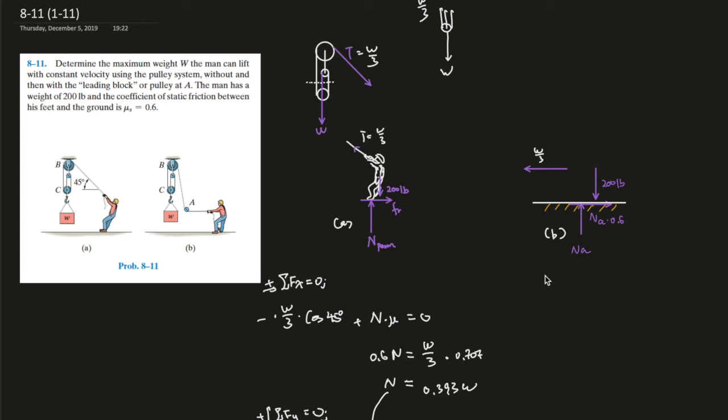But anyway, so let's use sum of the forces in the y direction. Because I think this is pretty easy, because N will just have to equal 200 pounds. There's no any other force going to the y direction. And then sum of the forces in the x direction over here equals to 0.